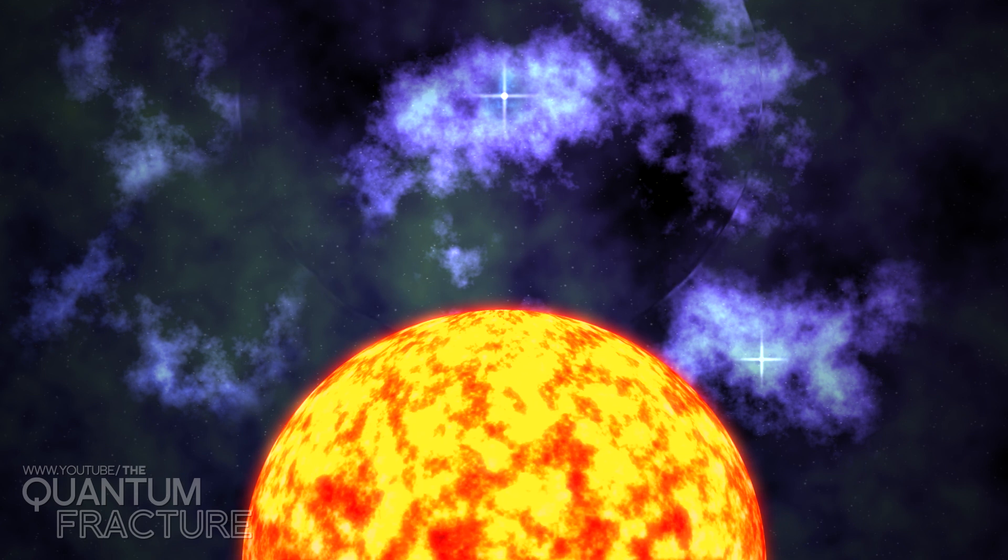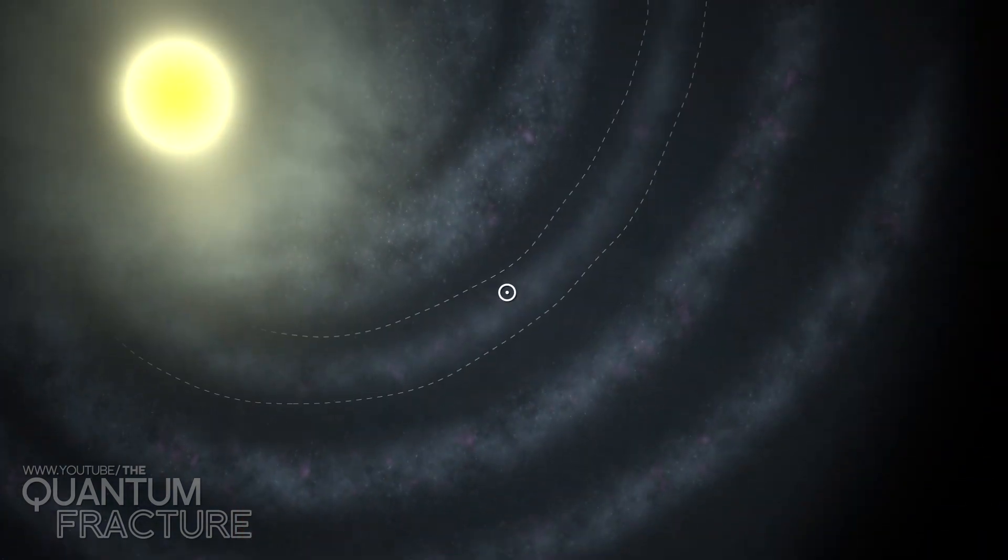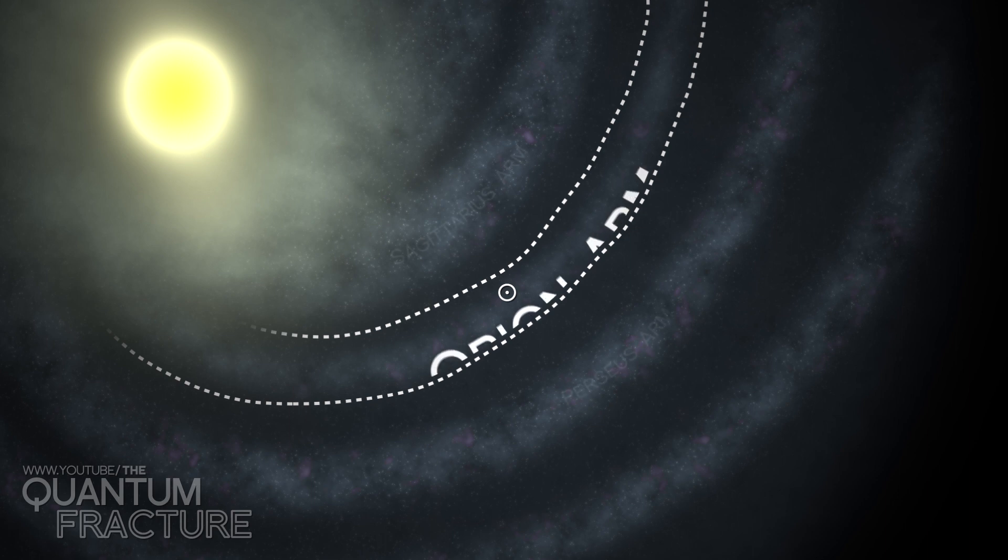This is our neighborhood. Specifically, the Sun lies on one of the spiral arms, called the local arm or Orion arm. Or maybe not.